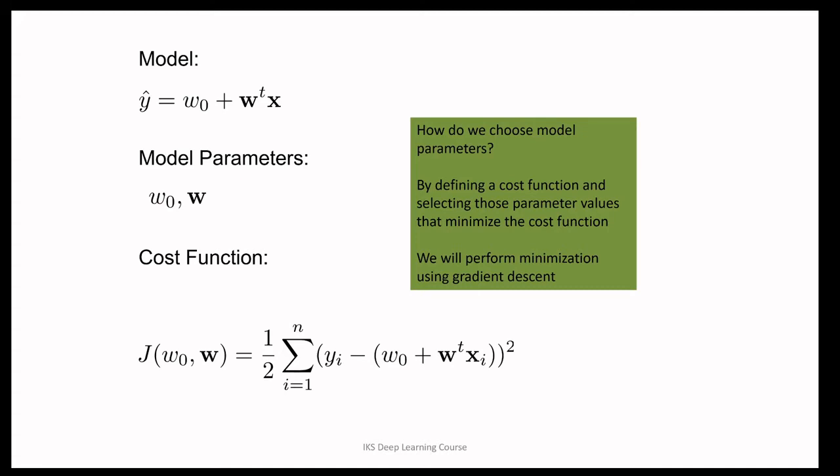Looking at the cost function we have defined: for an example i, the desired output is y_i, and our model produces an output y-hat_i, given by w0 plus w-transpose x_i. We take the difference between what we want and what the model is producing, take the square of the difference, and add them up over all examples. We divide this sum by 2, which is just for mathematical convenience. That is our criterion function.